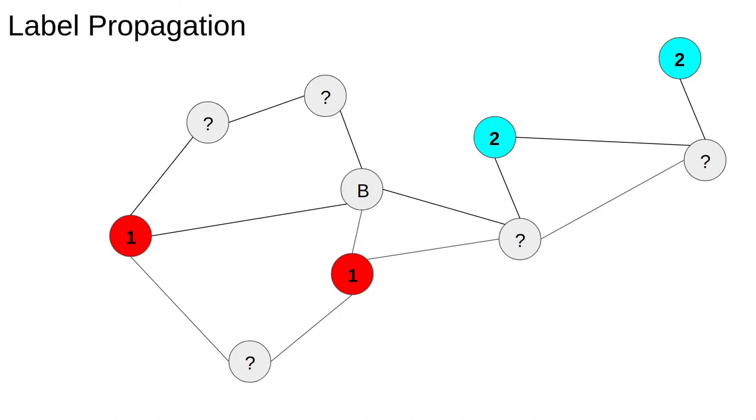For example, take the node B. Two out of three of its neighbours are red nodes, labelled 1. So we label it red. Node C has two out of three blue neighbours, so it gets labelled blue. Most of the other nodes will be labelled red.